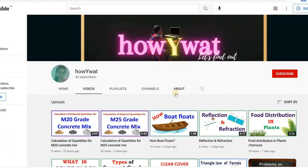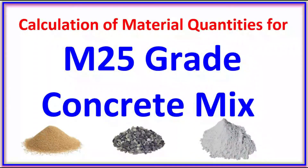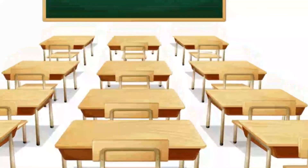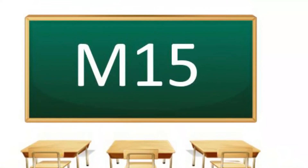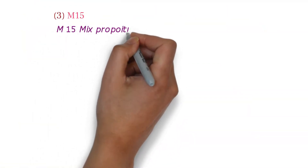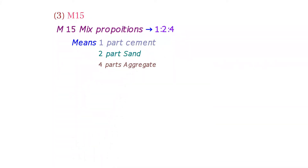In previous videos we learned about calculation of quantities for M25 and M20 grade concretes. In this video we are going to calculate the quantities required for M15 grade concrete. The mix proportion for M15 grade concrete is 1:2:4, meaning one part of cement, two parts of sand, and four parts of aggregate.